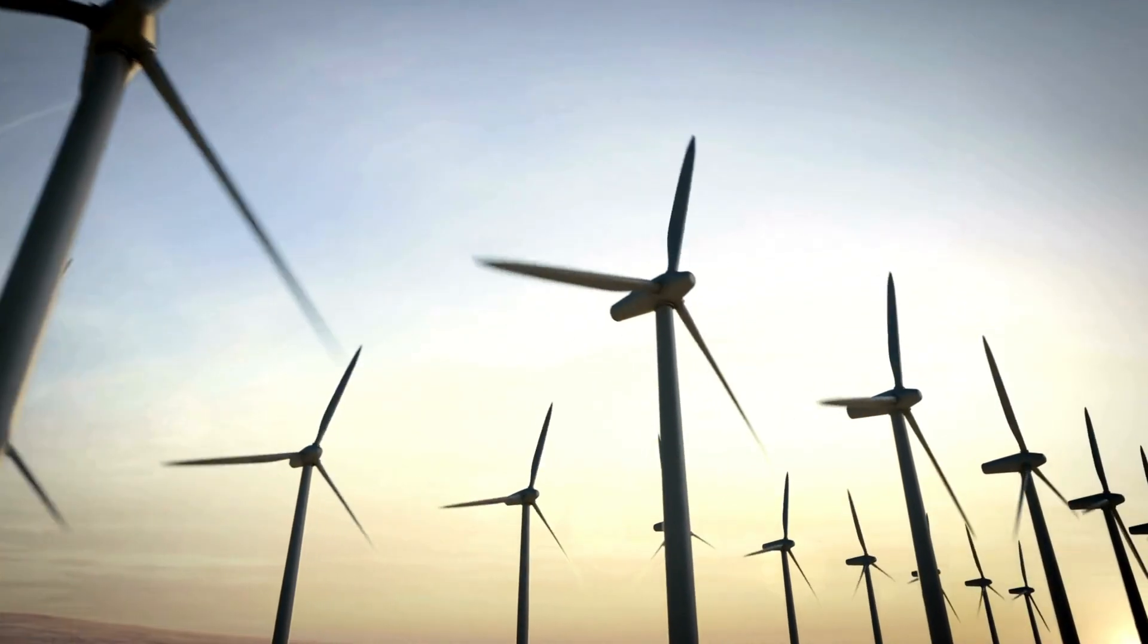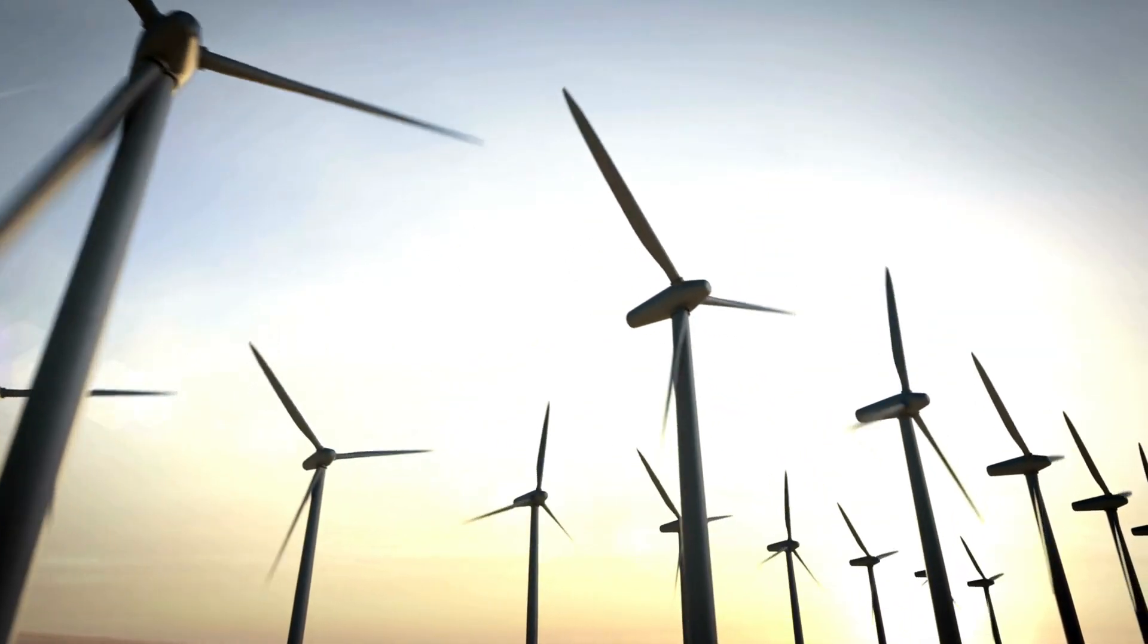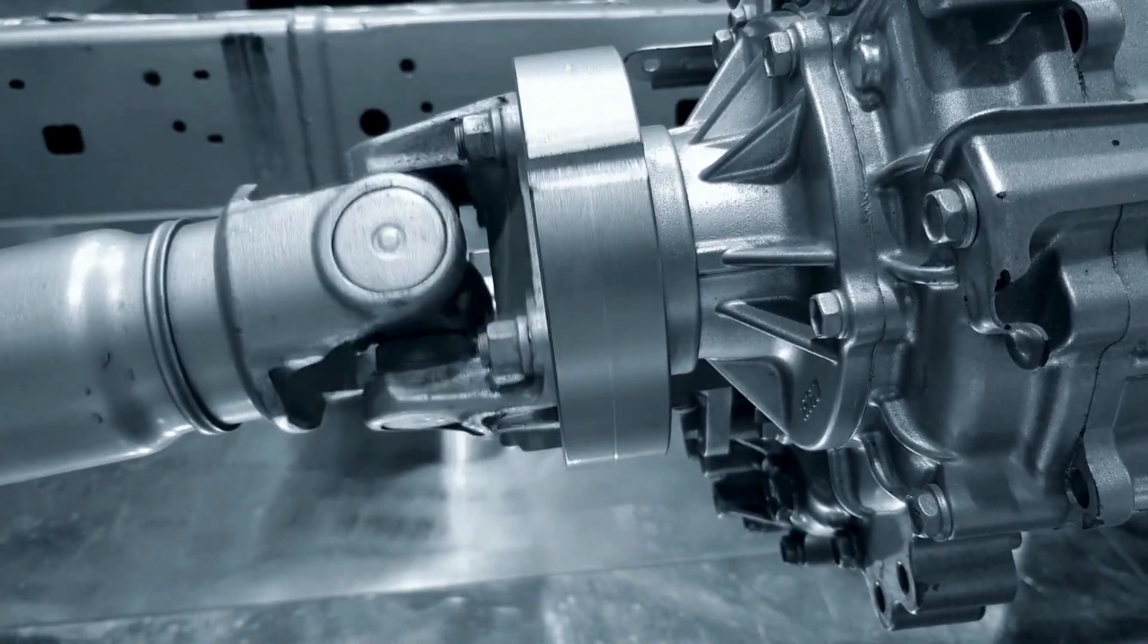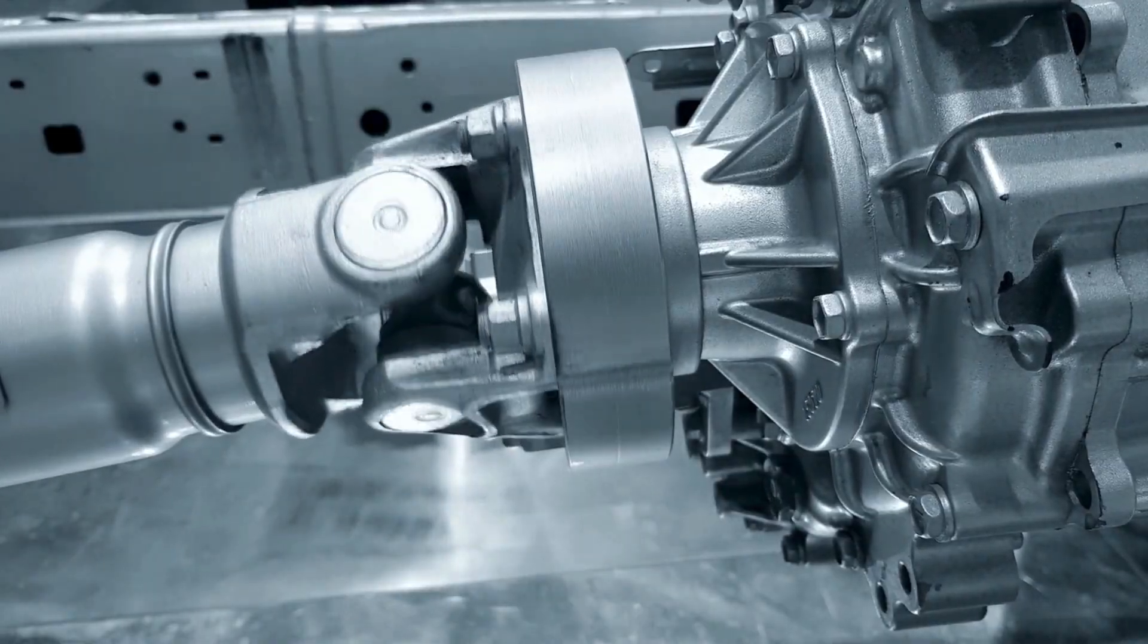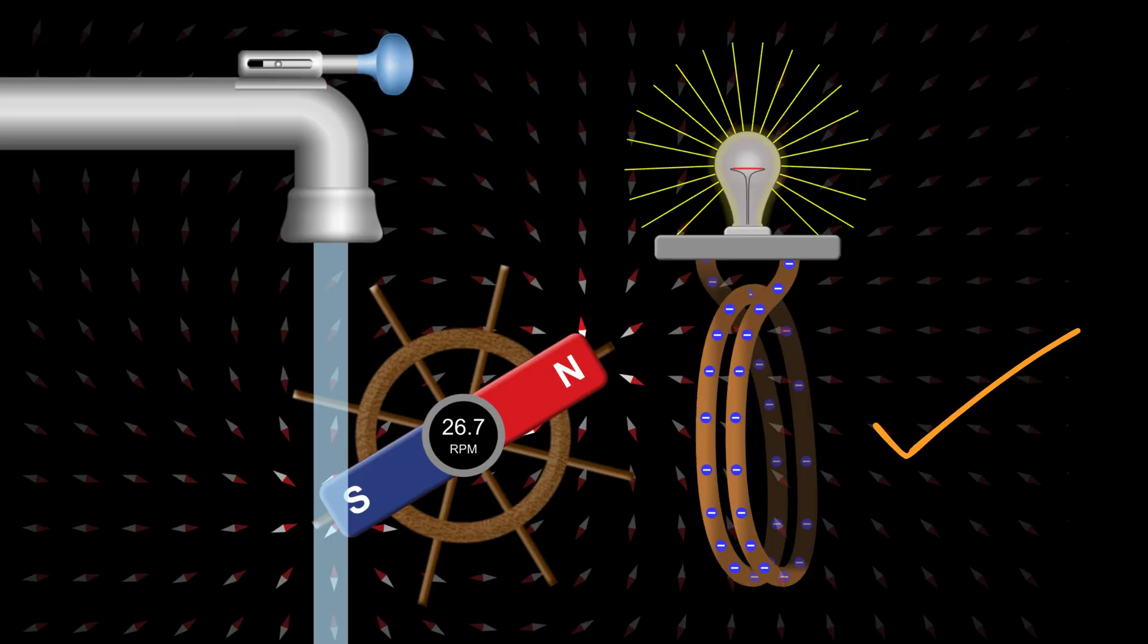When the wind blows, it turns the blades of a wind turbine, which are connected to a spinning shaft. This shaft rotates a magnet inside a generator, creating a changing magnetic field near wire coils. That changing field produces electricity.